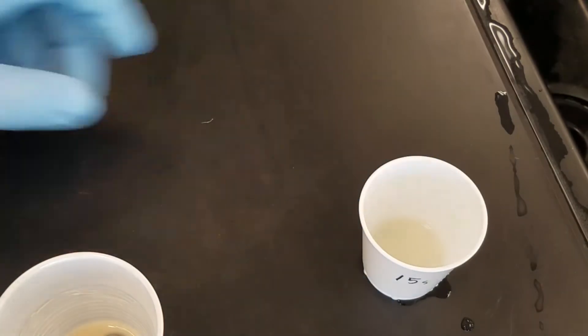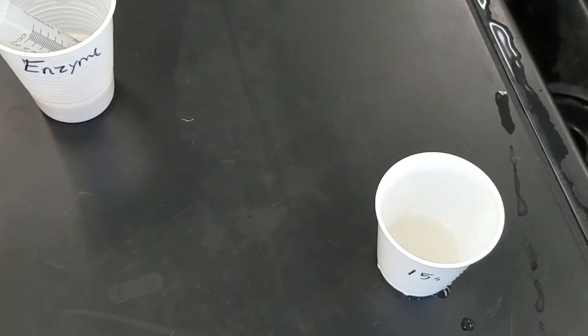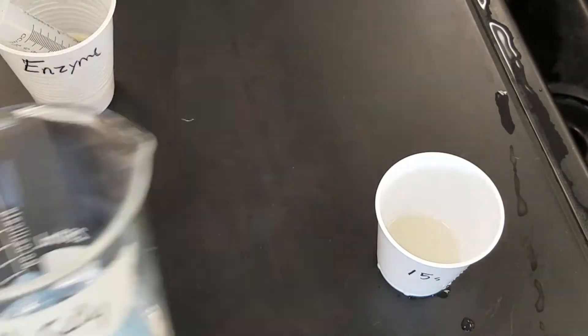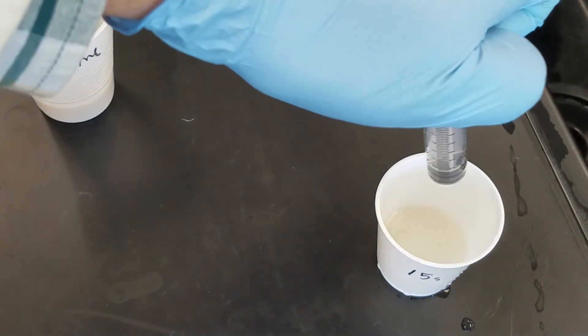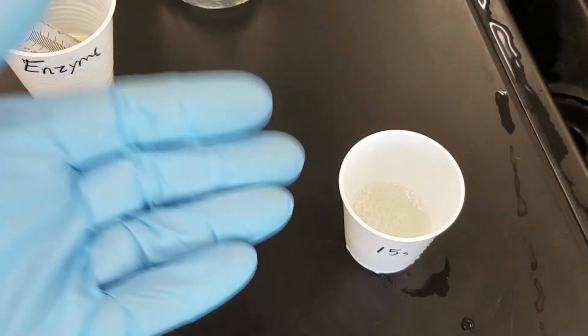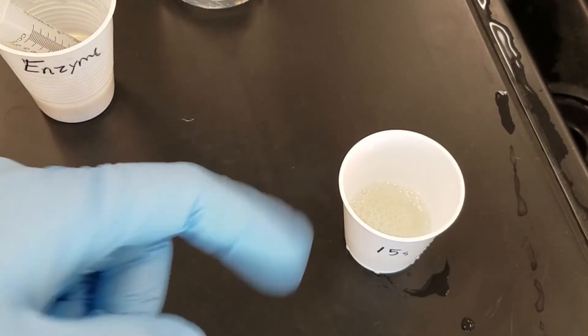Good idea to give it a little swirl. After 15 seconds has passed, you're going to add 10 milliliters of sulfuric acid and squirt it in just like that. Make sure you give it a little swish. The enzyme is denatured. The reaction has stopped.